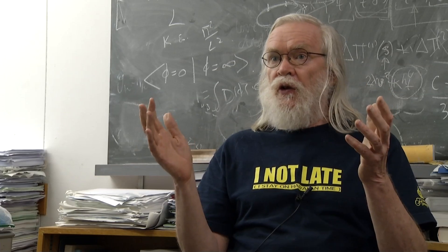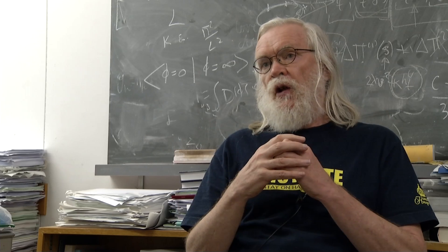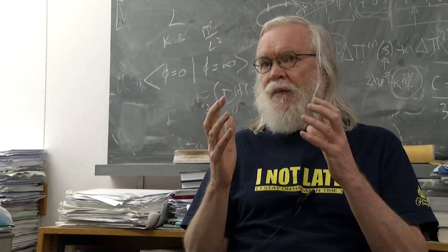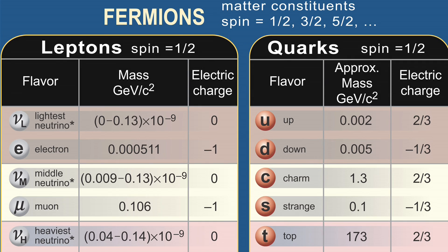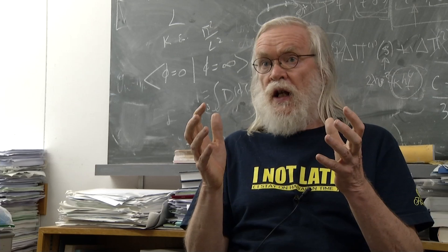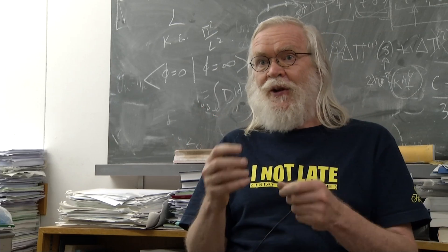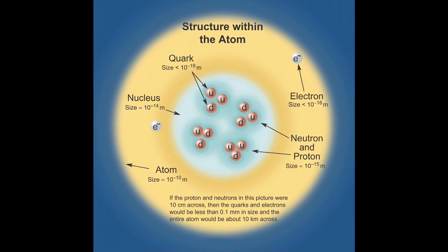Different particles spin at different rates. The particles that make up matter, those are what we call fermions, and they all have spin—not very much spin, so we call it spin one-half. That's very important. If that were not the case, then atoms could not exist, because all the electrons would collapse into the middle.